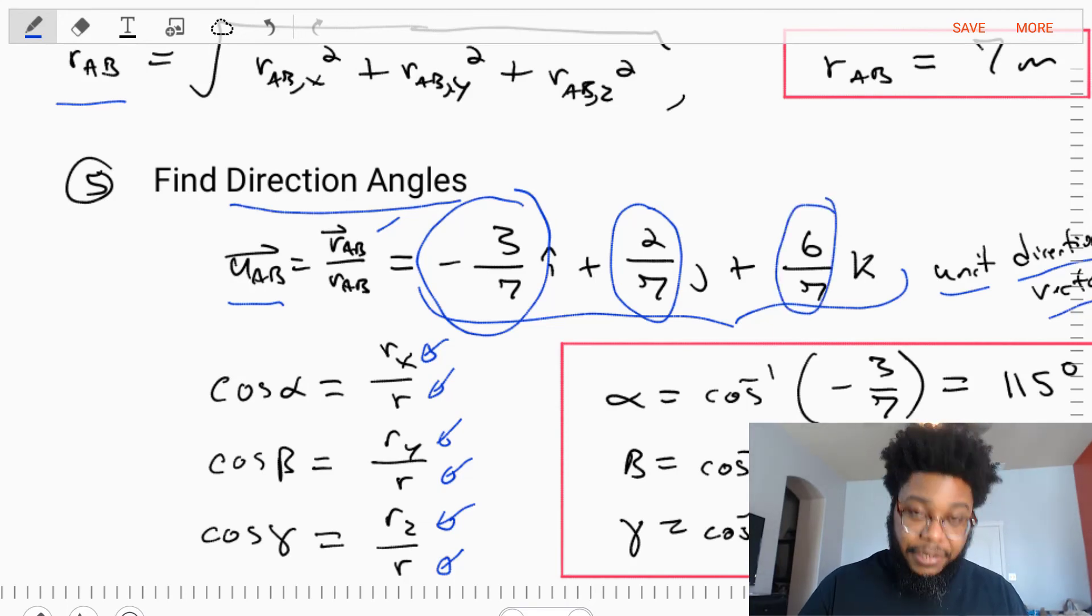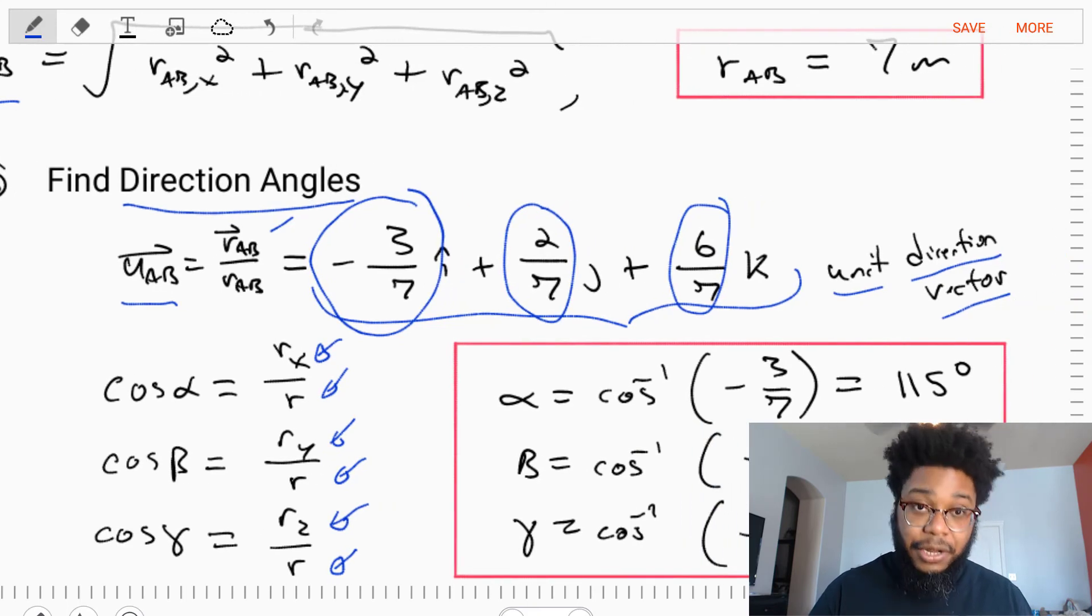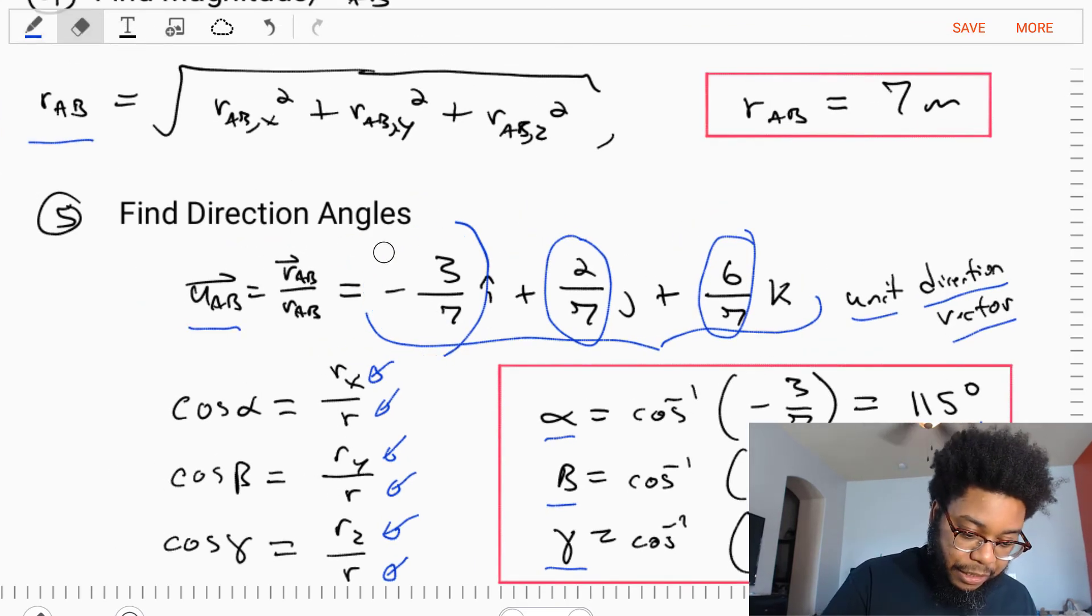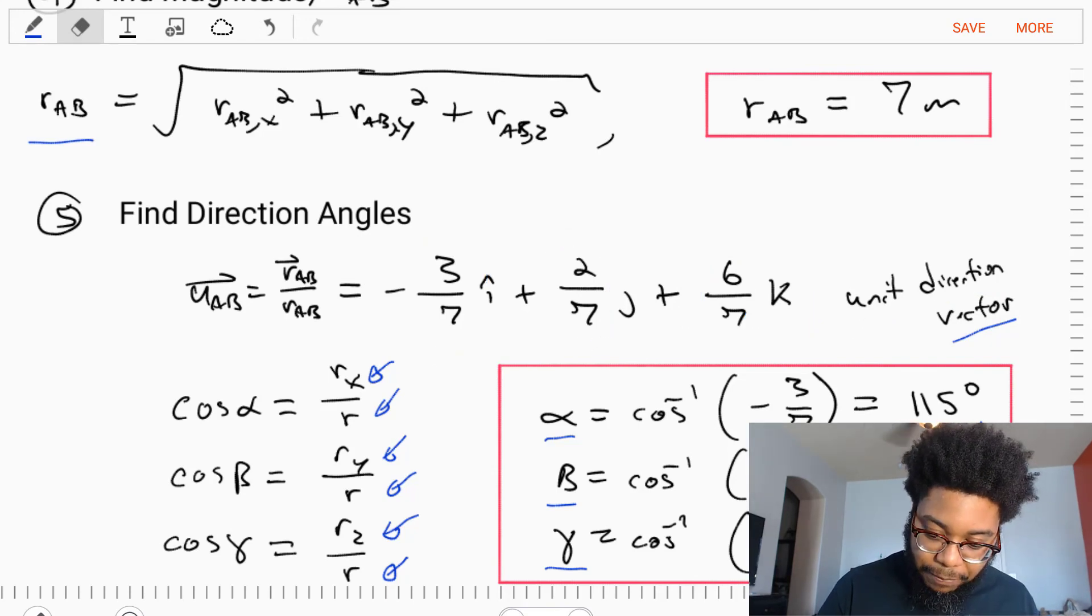Let's plug these ratios directly in and rearrange and solve. We'll find that alpha equals 115 degrees, beta equals 73.4 degrees, and gamma equals 31 degrees. Now we've solved this problem.